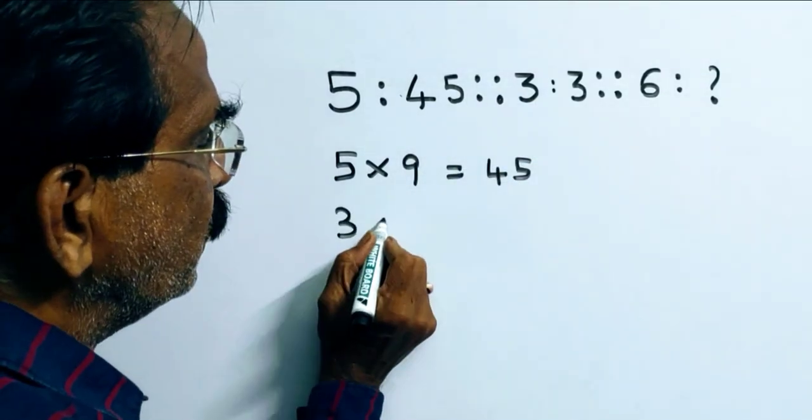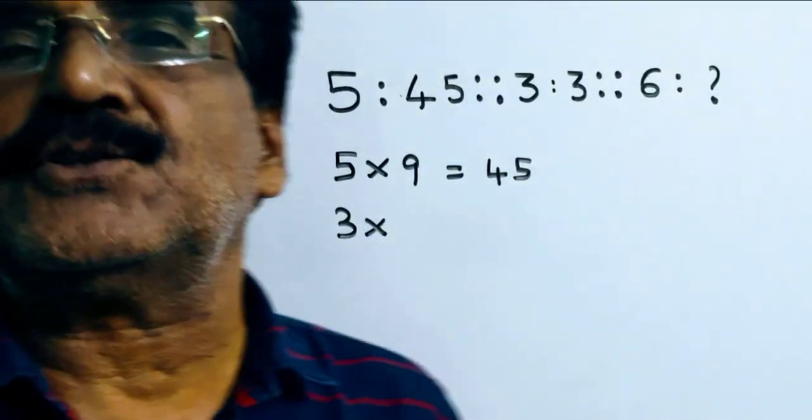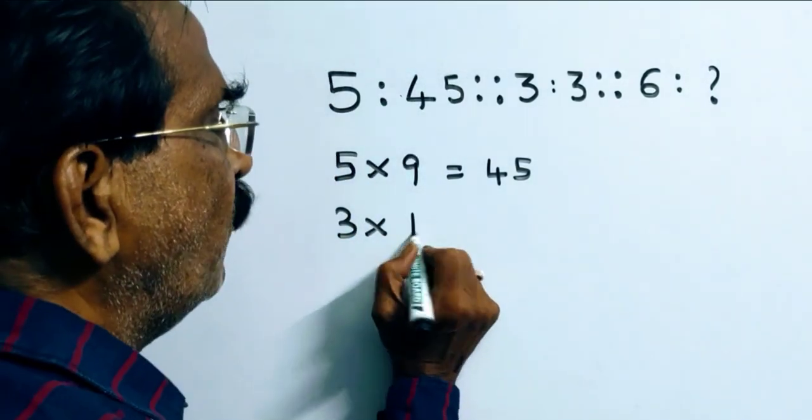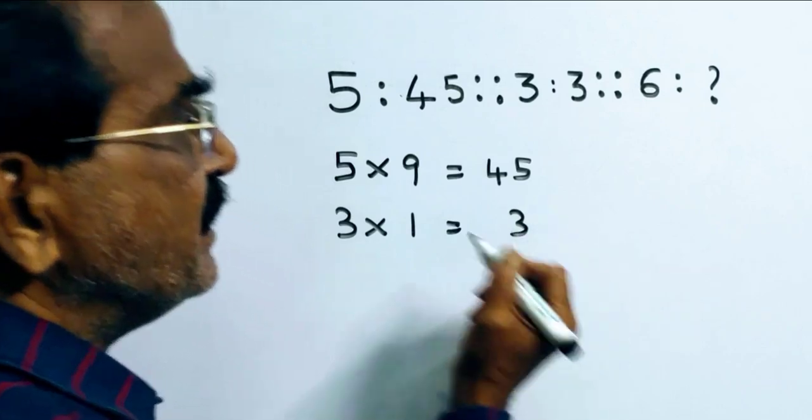In the same way, 3 into 3 minus 2 whole square. Friends, 3 minus 2 is equal to 1, 1 square 1. 3 into 1, 3. So, 3 is equal to 3.